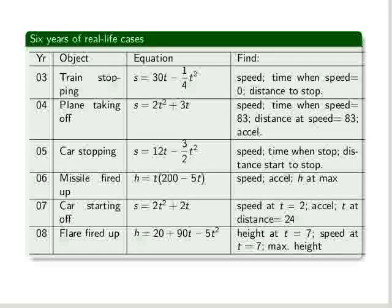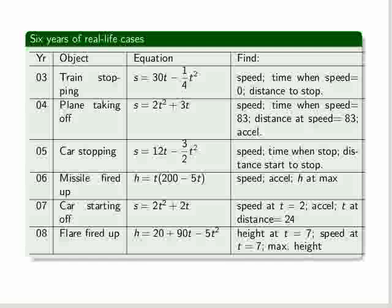And in 2008, it was a flare being fired up, a distress flare, supposedly. The height was given as 20 plus 90t minus 5t squared. And we were asked for the height at t equal to 7, the speed at t equal to 7, and the maximum height.